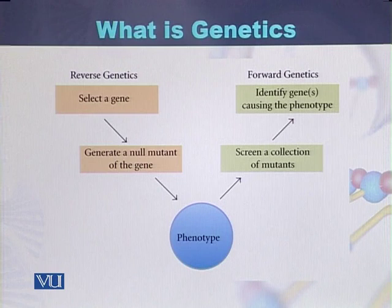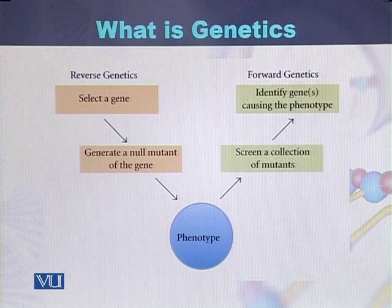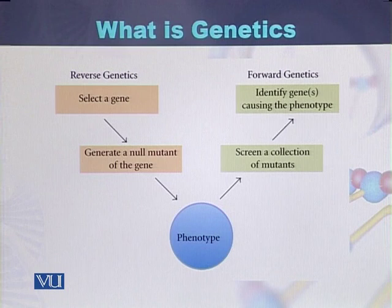In reverse genetics, a researcher or geneticist selects a particular gene, then creates certain mutations in that gene, and then identifies the phenotype based on those mutations. If this methodology is used to study genetics, then it is called reverse genetics.